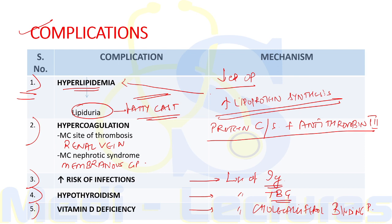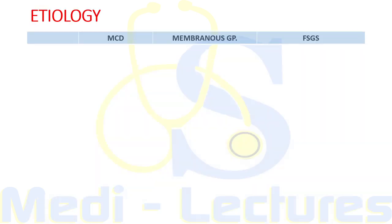These complications will be present in all cases of nephrotic syndrome, whether it is minimal change disease, membranous glomerulopathy, or focal segmental glomerulosclerosis. From now onwards we will discuss the three most important pathologies in nephrotic syndrome.